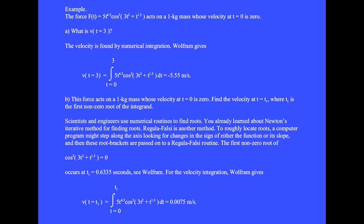The first non-zero root of the cosine cubed factor occurs at t1 equals 0.6335 seconds, as numerically found by, for example, Wolfram. For the velocity integration, Wolfram then gives v of t equals t1 equals 0.0075 meters per second.